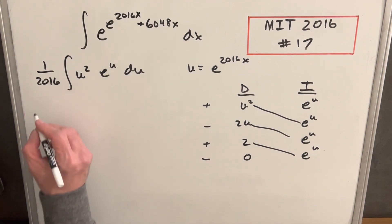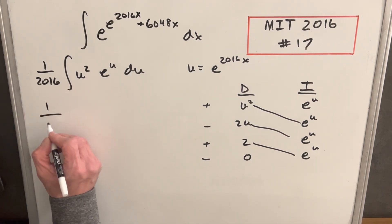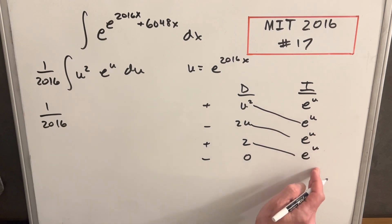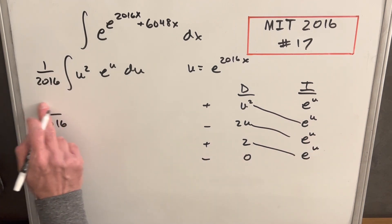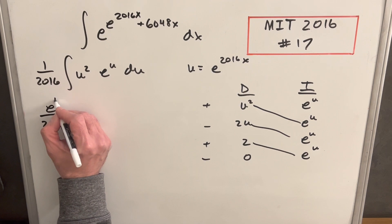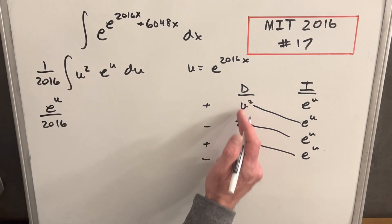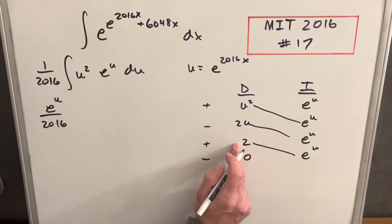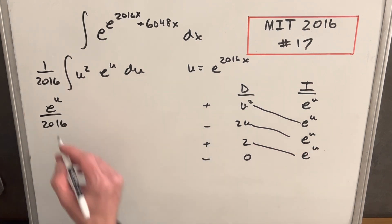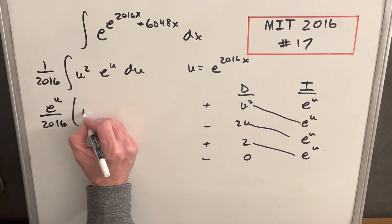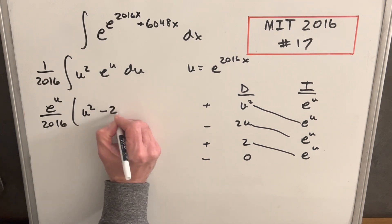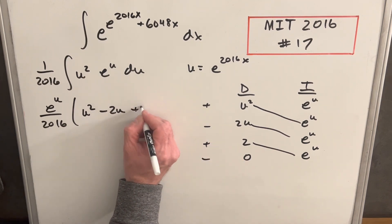Writing our answer in terms of u, I'm going to keep the 1 over 2016 out front. Since we have an e to the u in all these terms, I'm going to factor that out. Then I'm just concerned with the terms in the differentiation column. So we're going to have u-squared — don't forget the minus — minus 2u plus 2.